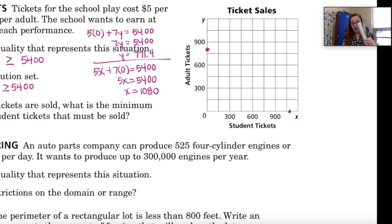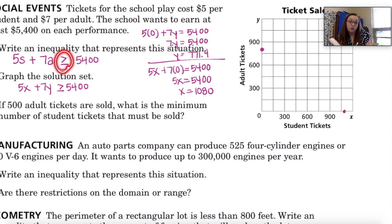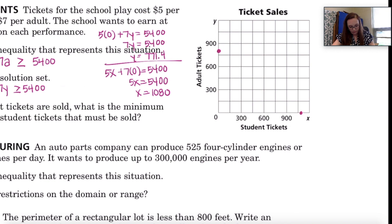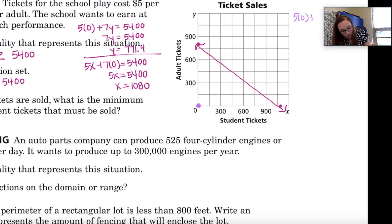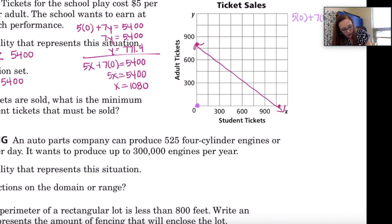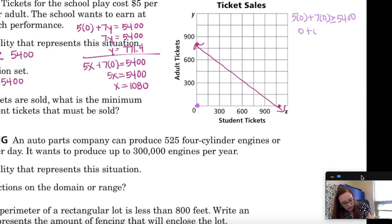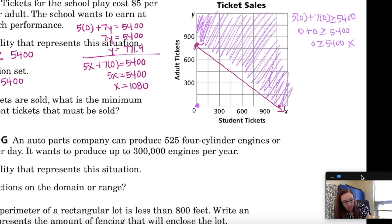Based on my inequality with that greater than or equal to, I know it's a solid line. Now I need to figure out how to shade. I'll pick the test point (0, 0): 5 times 0 plus 7 times 0 — is that greater than or equal to 5,400? That's 0, which is not greater than or equal to 5,400, so (0, 0) is not a solution. My solution set would be on the opposite side of the line.